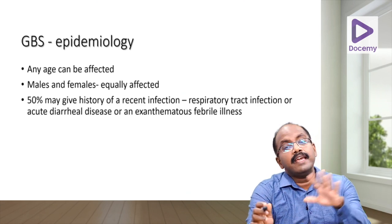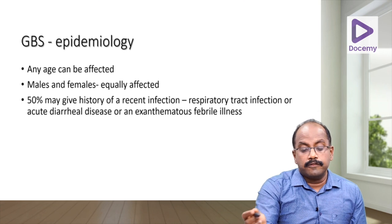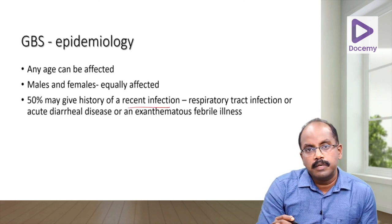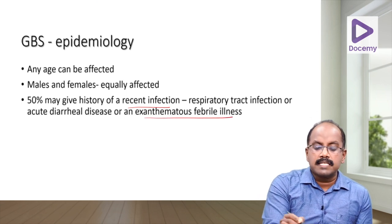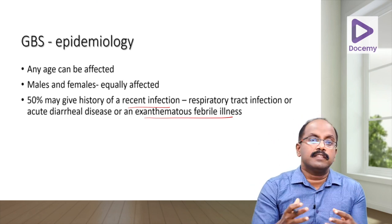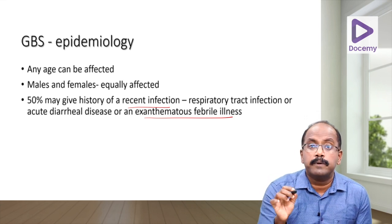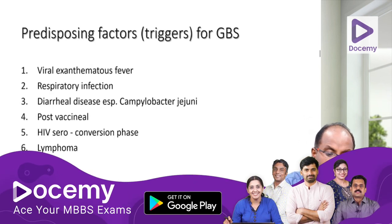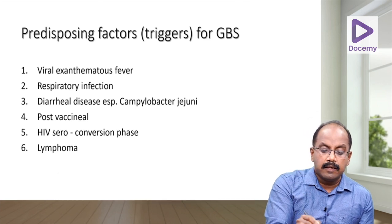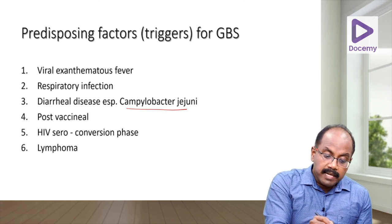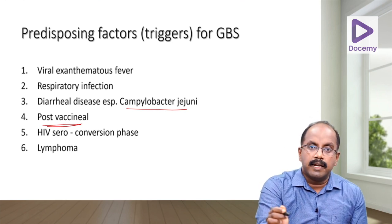Regarding epidemiology, GBS can affect any age — children and the elderly alike — and males and females are equally affected. About 50% of patients give a history of recent infection. Always ask about recent respiratory infection, diarrheal disease, or an exanthematous febrile illness. Common triggers include viral exanthematous fever, respiratory infection, diarrheal disease especially by Campylobacter jejuni, and post-vaccinal GBS.